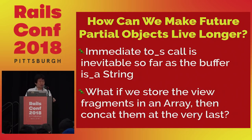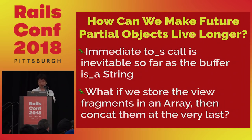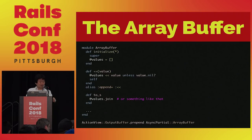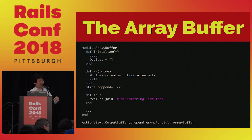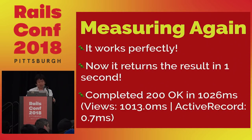What if we store view fragments in an array instead of a string, then concatenate all the fragments when returning the HTML response body? Here's the implementation — it's called array buffer. I overrode the concat method to store each given fragment in an array. Then when .to_s is called, you just join them all. Let's run the benchmark again — now it returns the result in one second. Win!